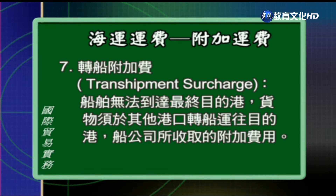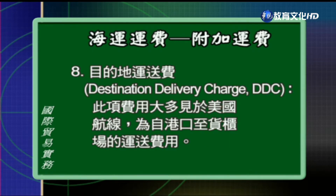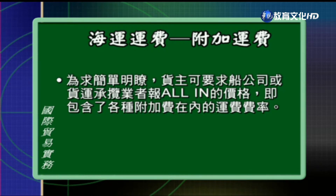第六种是空柜调度费，因为旺季的时候货柜去程满载，可是回来的时候速度很慢，结果使得远东地区没有空的货柜可以用，所以船公司就额外加收了空柜调度费。第七个是转船附加费，因为船只没有办法直接到达目的港，而必须要经过其他港口来转船，所以船公司就加收了转船附加费。第八种是目的地运送费，这笔费用大部分是在美国航线才会收，主要是收从港口到货柜厂的运送费用。由于附加费用很多，我们可以要求船公司或货运承揽业者报给我们一个all-in的价格，也就是包含各种附加费在内的运费费率，这样货主在计算海运运费的时候就会比较简单轻松一点。